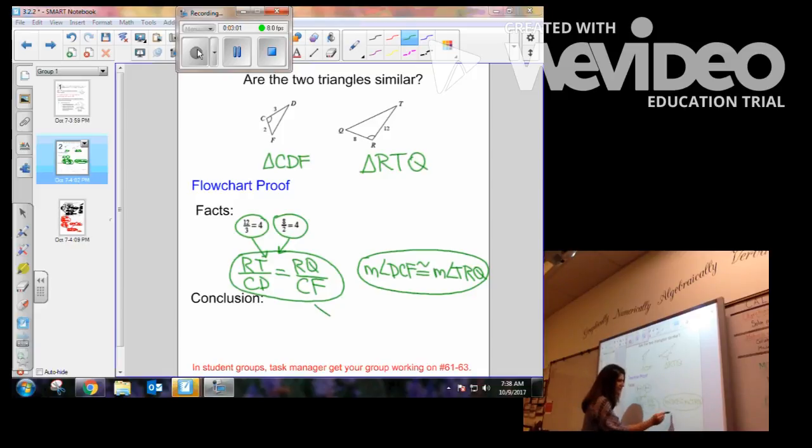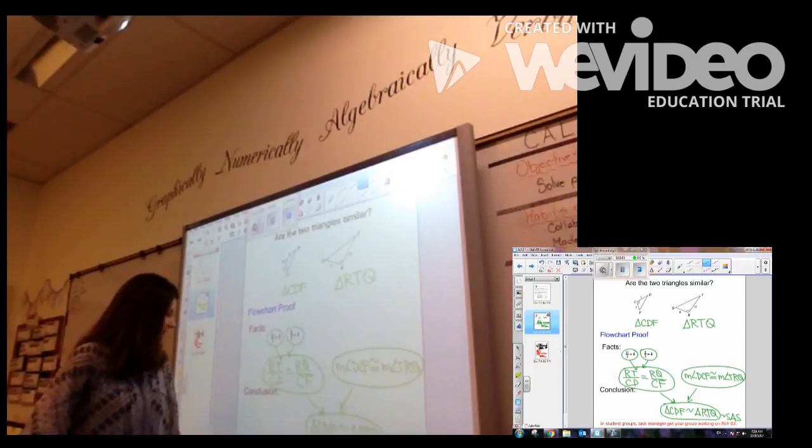Now having these two facts, I now can state the similarity of the two triangles. Triangle CDF is similar to triangle RTQ. We put a circle around it. And how am I allowed to say that? By the similarity condition of side, angle, side. Fantastic.